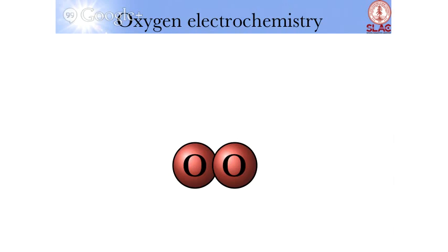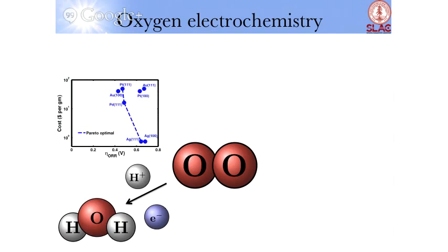One can exploit oxygen electrochemistry in a whole array of ways. I'll outline the umbrella of chemistry that one could do. What one could do with oxygen is take four protons and four electrons and make water.